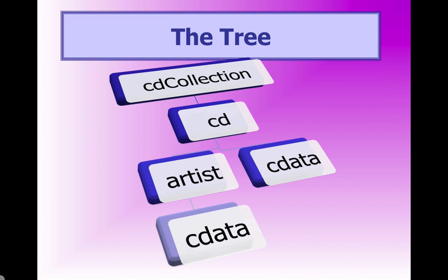Here's how I see the tree structure. The cd collection is the root. It contains child elements named cd, and each cd contains another child element named artist. The cd also contains CData, or character data, which would be the text — in our case, this would be the album name. The sub-element artist also contains CData, which is the name of the artist. Again, this could have all been laid out as attributes, or there are many different ways we could have laid out this data. But based on how this XML document is laid out, this would be the appropriate tree.